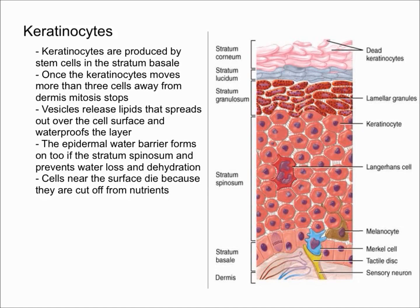In this video I'm going to talk about keratinocytes and essentially the life cycle of keratinocytes. To summarize what we learned already, keratinocytes are produced deep in the epidermis by stem cells, and more specifically they're produced in the stratum basale, which is the lowest layer — the layer closest to the dermis.